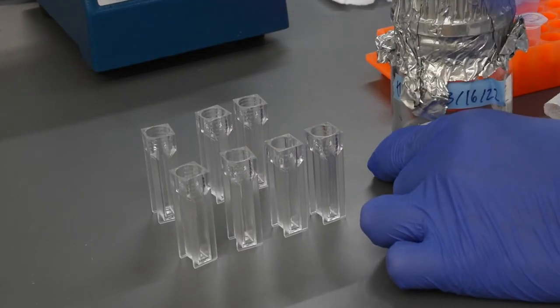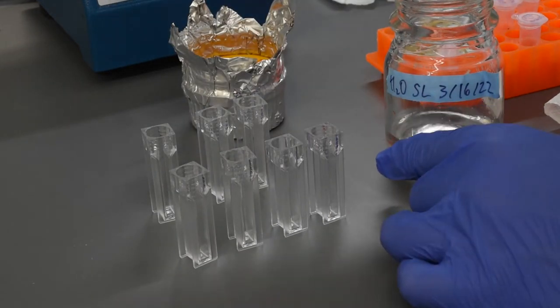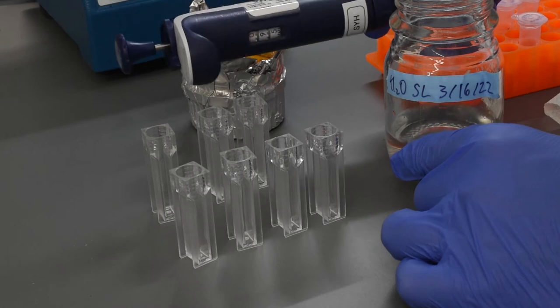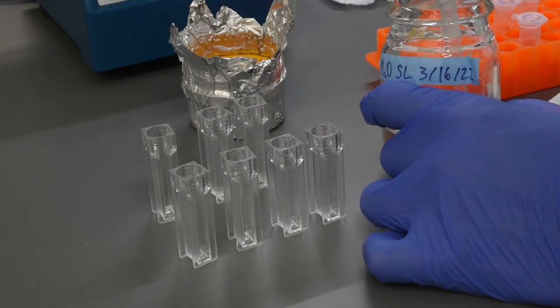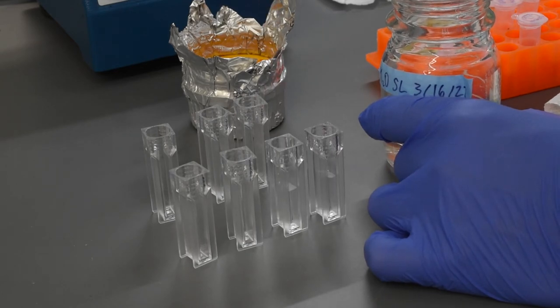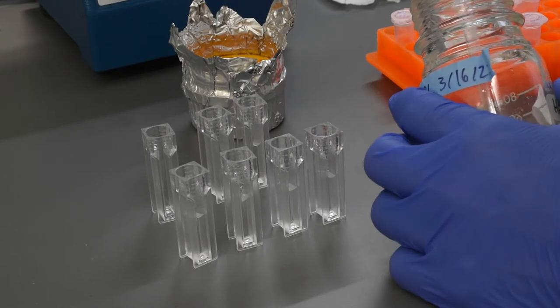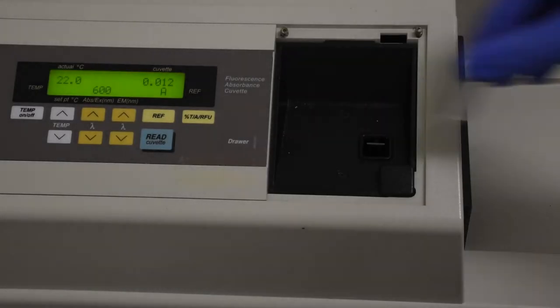Next, we are going to measure the OD600 of the cell suspensions. I use a 1 to 20 dilution to do this. Fill 1 centimeter polystyrene cuvettes with 950 microliters of water. Make sure your spectrophotometer has had time to turn on and warm up its lamp. Blank the spectrophotometer with the water-filled cuvette.